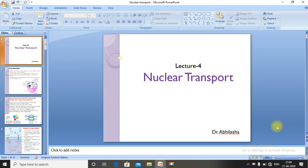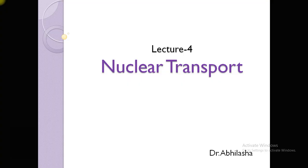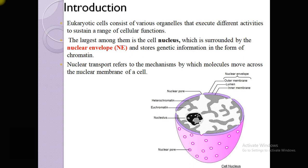Welcome back students. Today we start with Lecture 4, titled 'Nuclear Transport' — what is nuclear transport and its major role in molecular biology. All eukaryotic cells contain various organelles like ribosomes, cytoplasm, mitochondria, endoplasmic reticulum, Golgi bodies, and vacuoles that execute different activities like ATP synthesis, protein synthesis, and protein transportation to sustain a range of cellular functions.